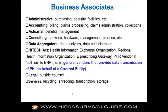Business associates you might already have include administrative, purchasing, security, facilities, accounting, actuarial, and consulting — a lot of these business associates you probably already have in place and didn't realize they were business associates, like your CPA or your attorney. And because they're business associates, you're now required to have business associate contracts with these entities.